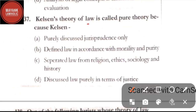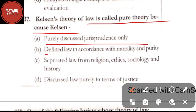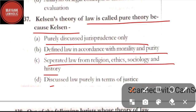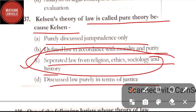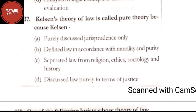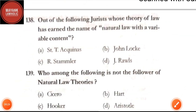Question number 137: Kelsen's theory of law is called pure theory because Kelsen — option A: purely discussed jurisprudence only; option B: defined law in accordance with morality and purity; option C: separated law from religion, ethics, sociology, and history; option D: discussed law purely in terms of justice. The correct answer is option C — Kelsen separated law from religion, ethics, sociology, and history.